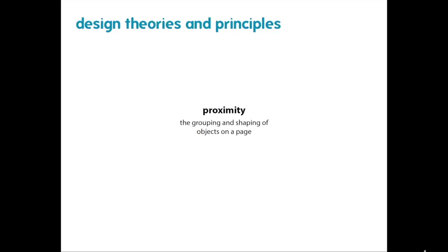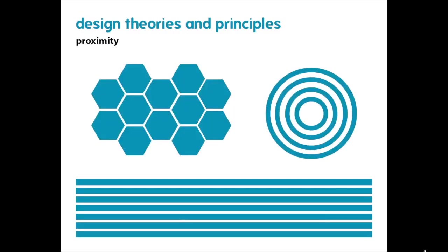Proximity is the grouping and shaping of objects on a page, keeping like things together and unlike things separate. By putting lines next to lines, hexagons next to hexagons, and concentric circles within each other, it becomes very clear there are three different groupings. This would read much differently if everything were just spread out over the page with no overarching order.